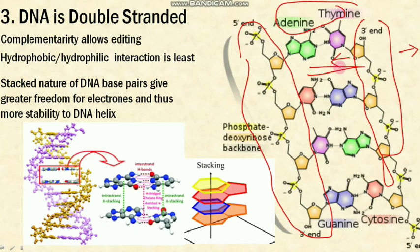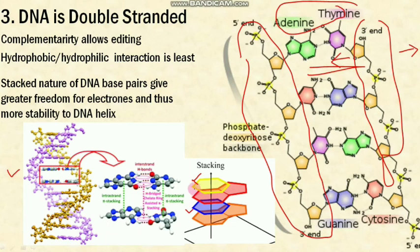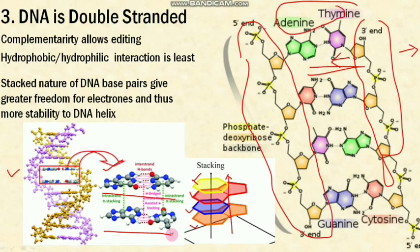The third advantage of double-stranded DNA is the stacked nature of its base pairs. The nitrogen bases are arranged one above the other — like coins stacked on top of each other. In the figure, yellow and blue represent pyrimidines and red and brown represent purines, all stacked from one base pair to the next. This stacked arrangement gives greater freedom for electrons and makes the DNA helix more stable.